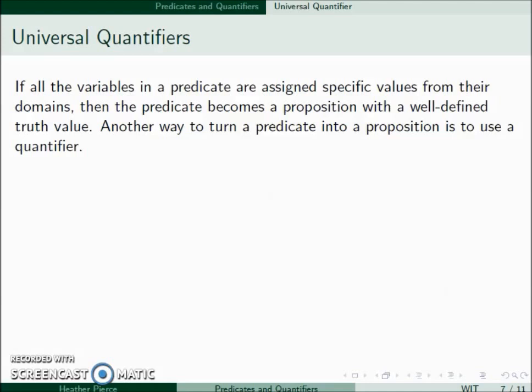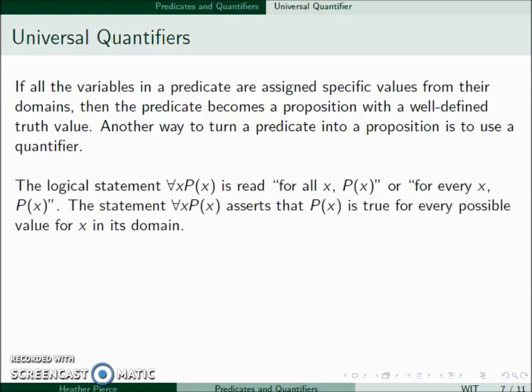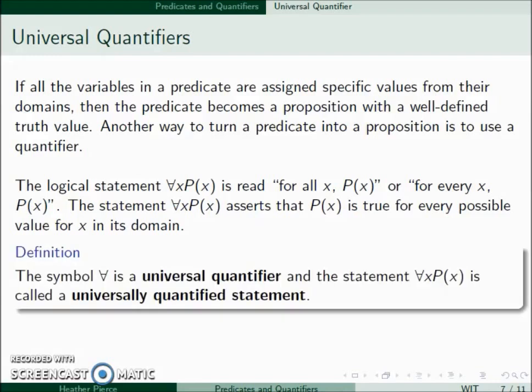We'll talk about two quantifiers in particular, the first being the universal. The logical statement ∀x P(x), also read as for every x P(x), asserts that P(x) is true for every possible value for x in its domain. This symbol is called a universal quantifier. The statement ∀x P(x) is called a universally quantified statement.